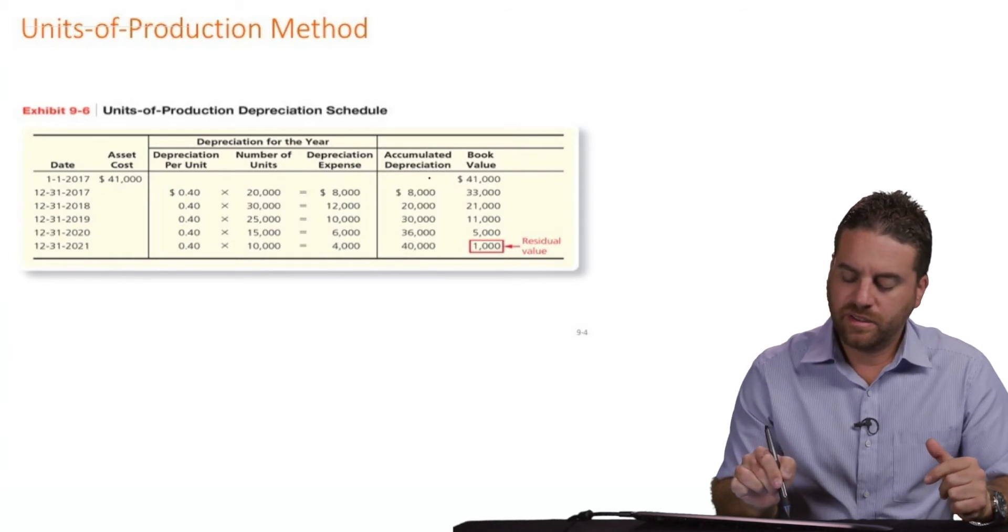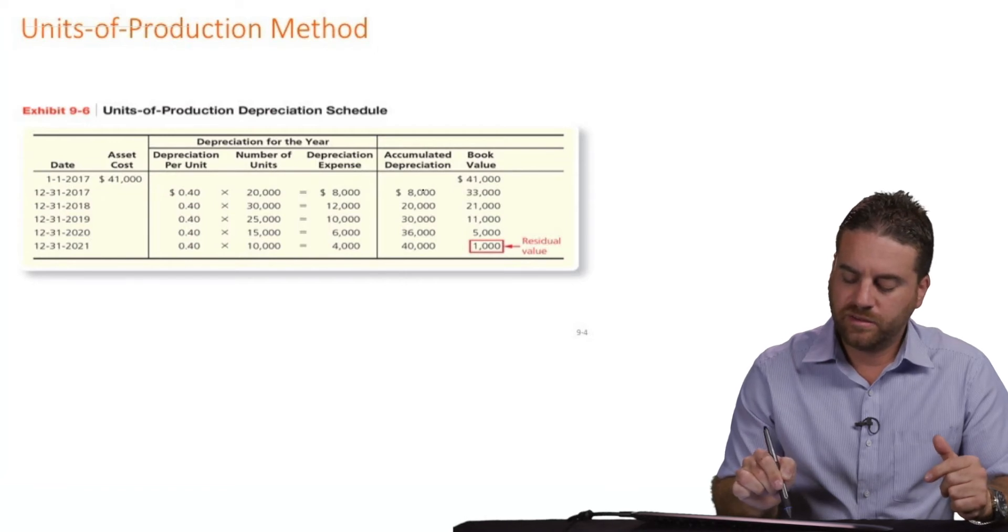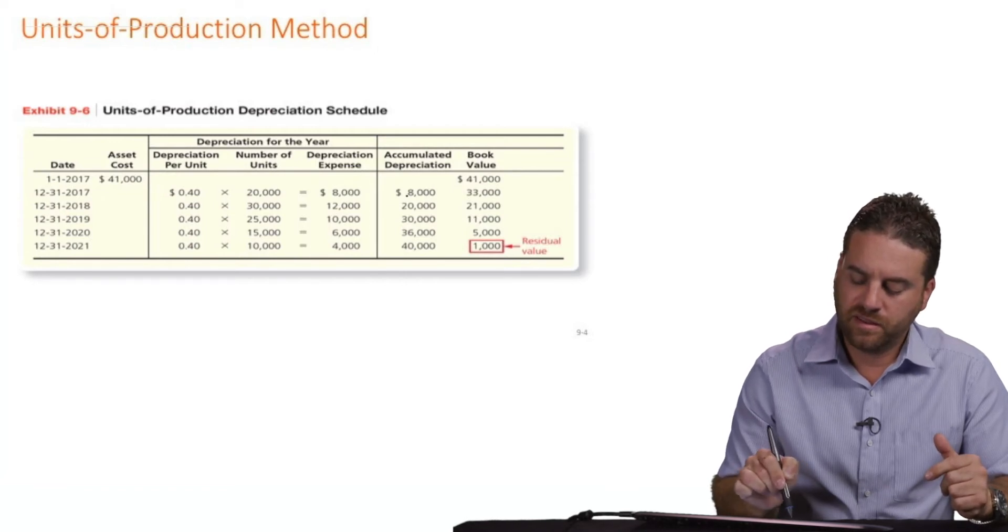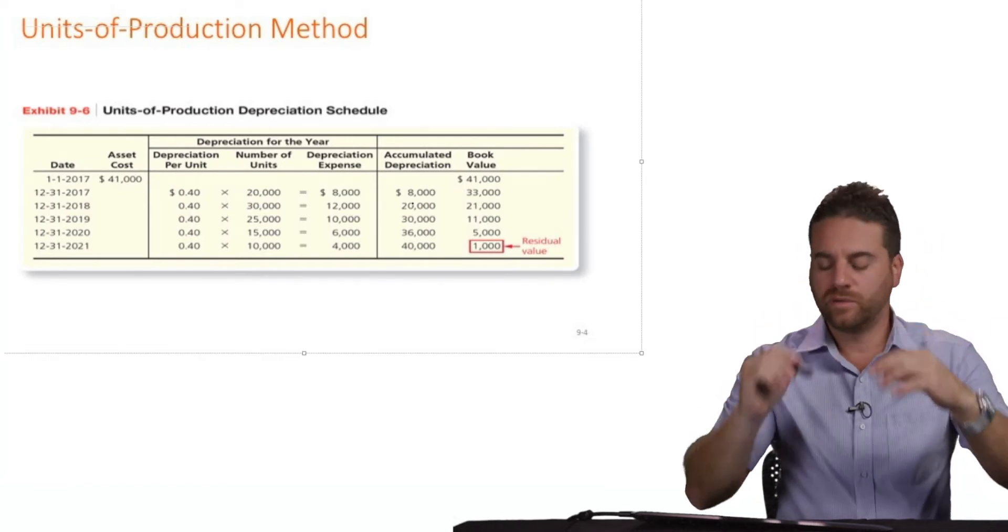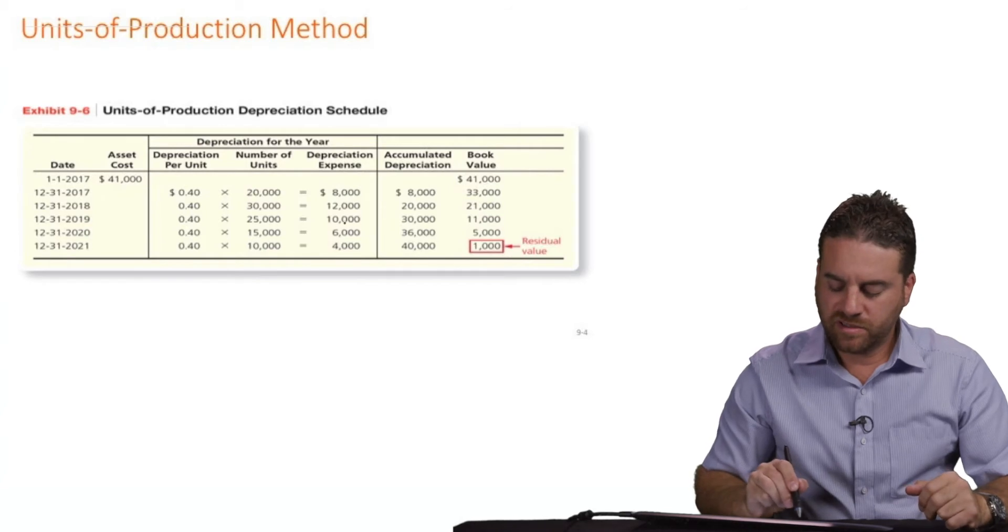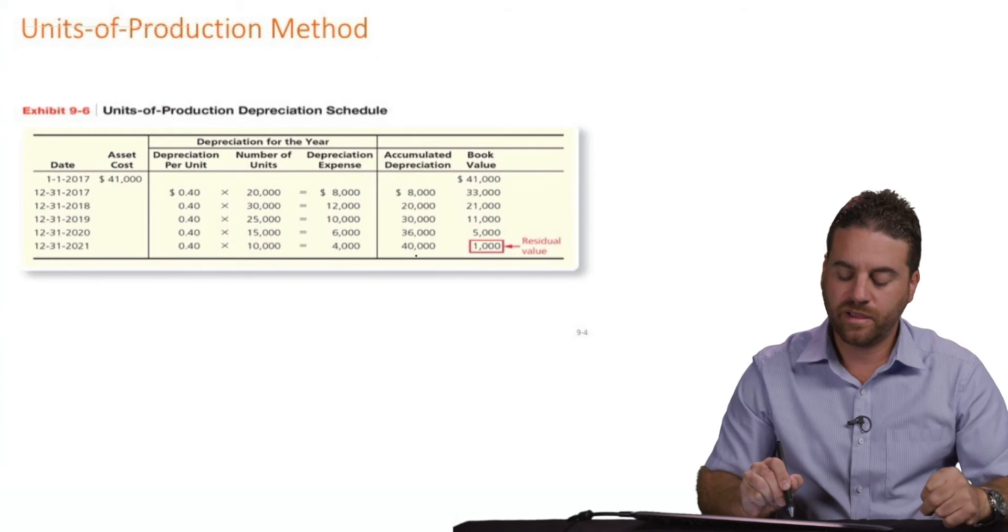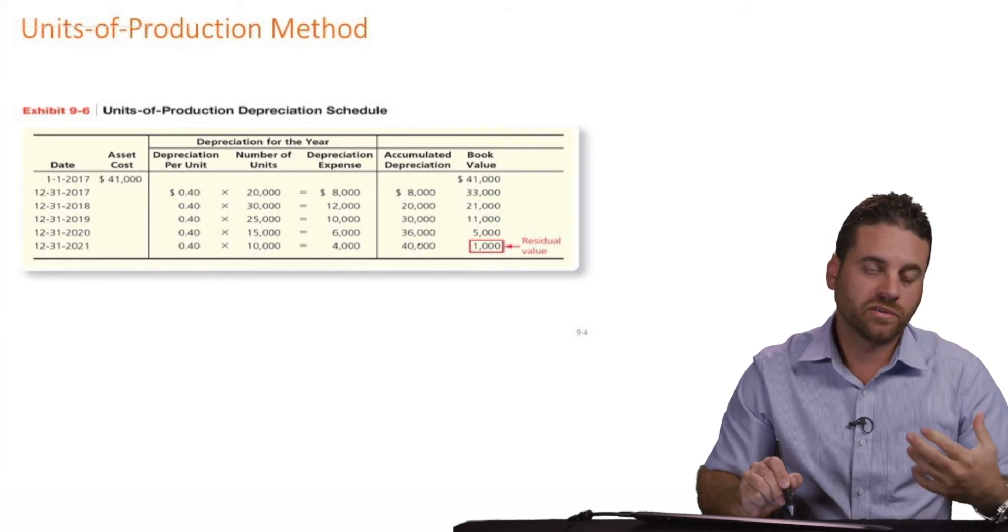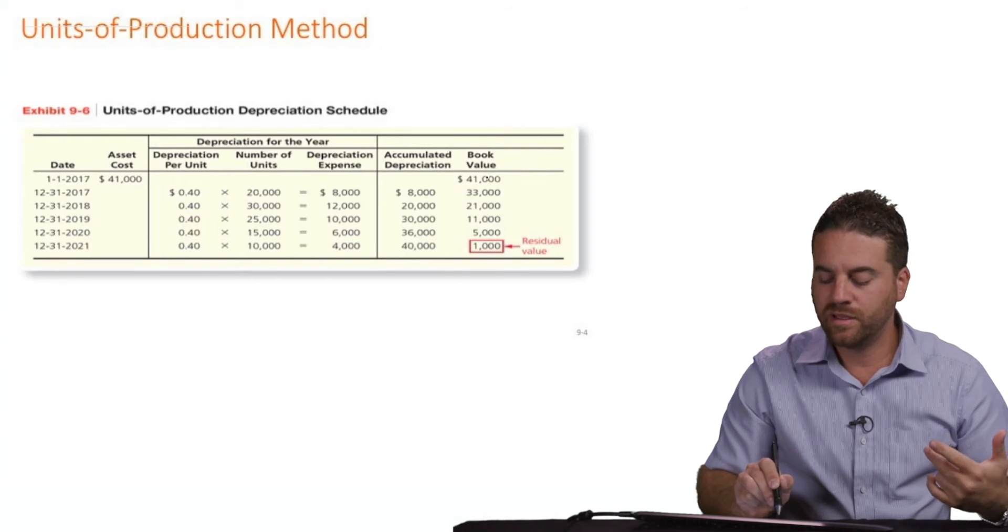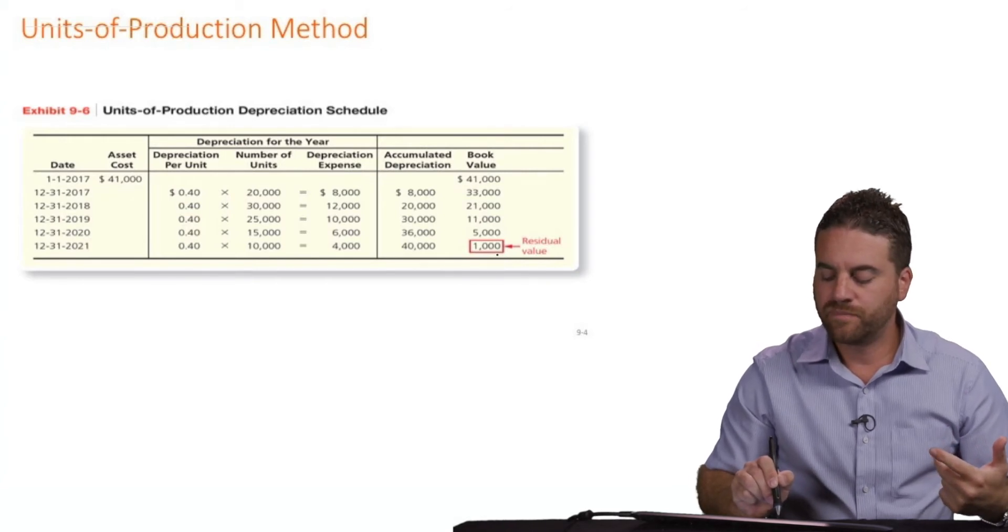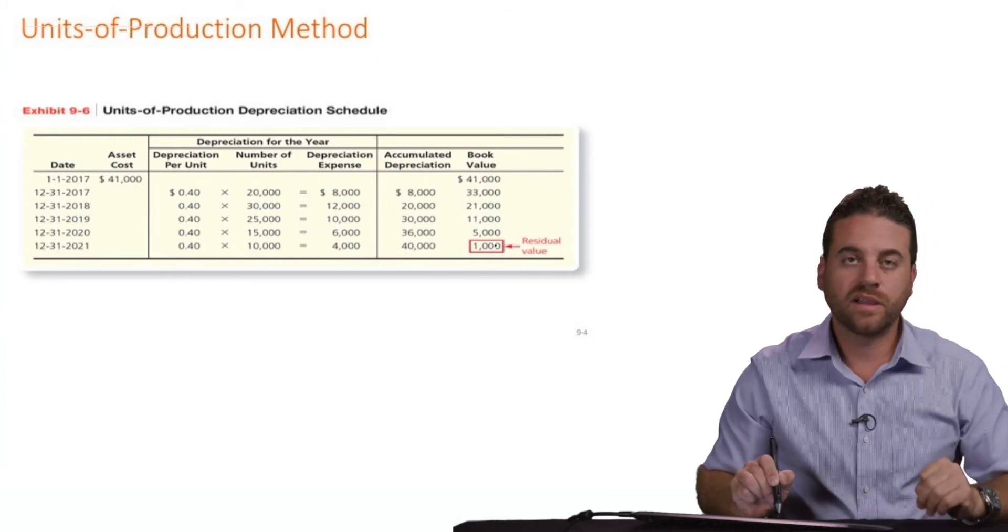So accumulated depreciation, year one is 8,000. And then year two, we added the 12 plus the 8, that gives me 20. And then year three, we're accumulating more and more. So 20 plus the 10, 30. 30 plus the 6, 36. 36 plus the 4, we came up with 40,000. Total depreciation over the five years is 40,000. And the original value was 41. So obviously, the residual value will end up being $1,000 as well, just like the straight-line method.